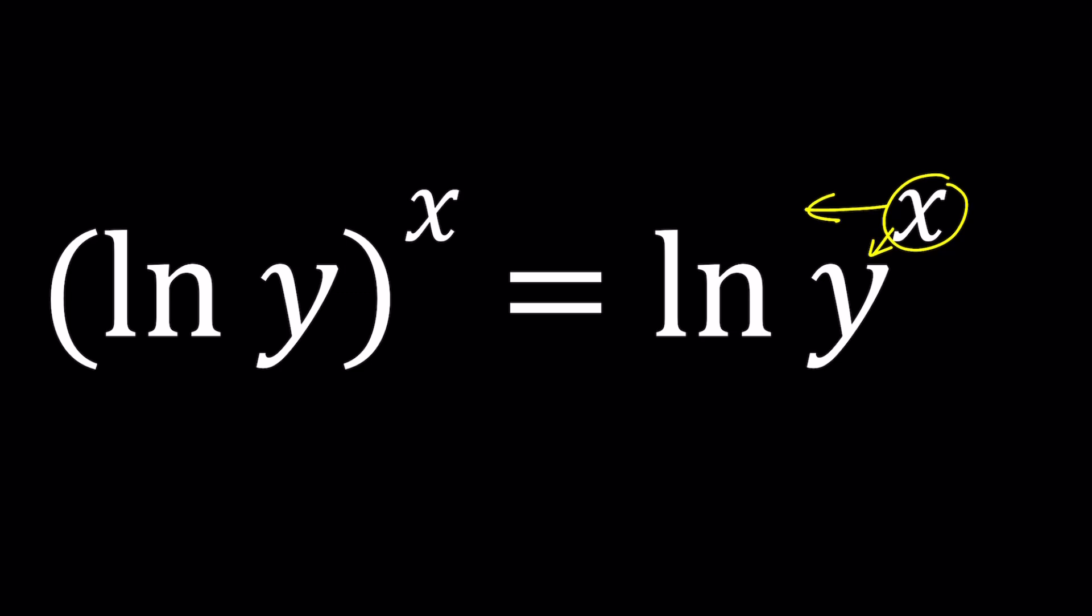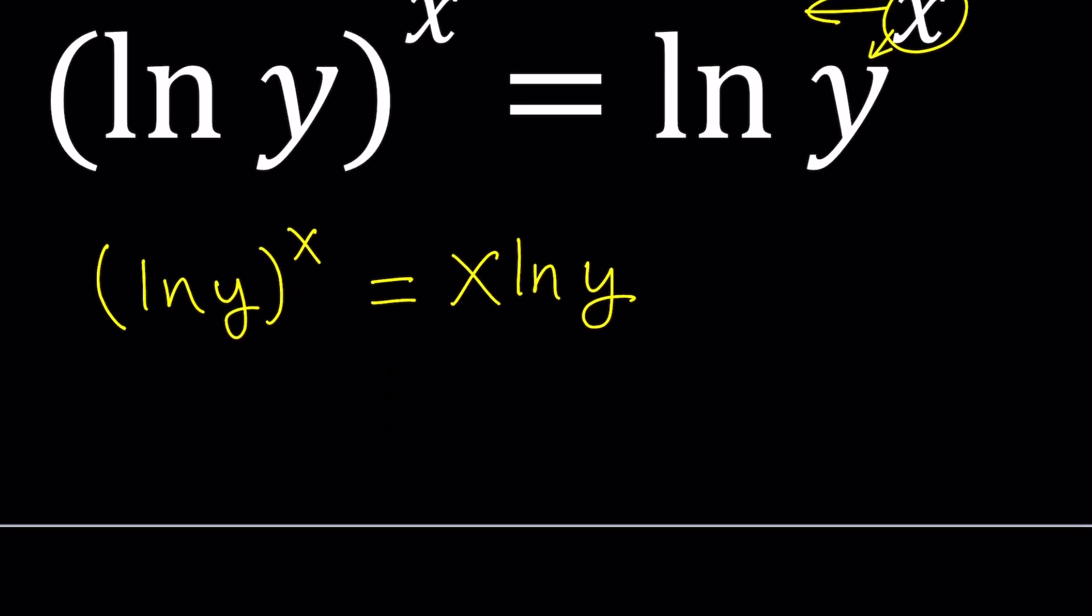So we can do it on the right-hand side. Let's go ahead and leave the left-hand side as is and move this x to the front and write it as x times ln y. So we can't move that x on the left. We're going to leave it like that.